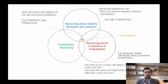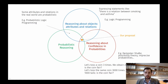Let me start by putting our work in context. We are living in a world full of objects, and those objects might have relations between them, so we want to be able to express statements like there is a relation between smoking and asthma. Logic programming is one approach for doing that. At the same time, some attributes and relations in the real world are probabilistic, and at the intersection of these two areas there are probabilistic logic programming approaches.